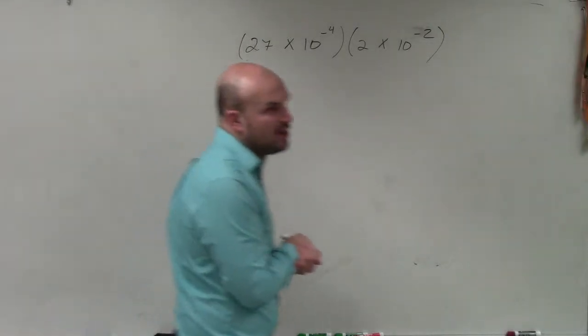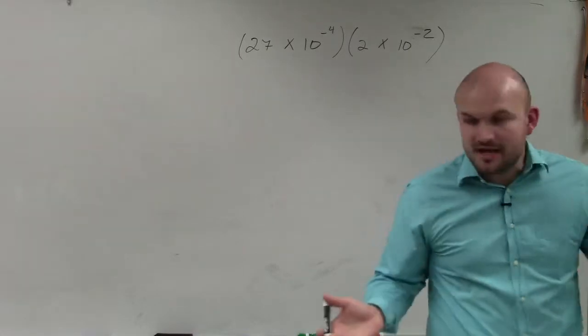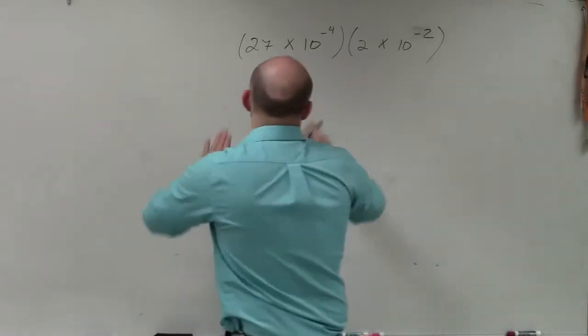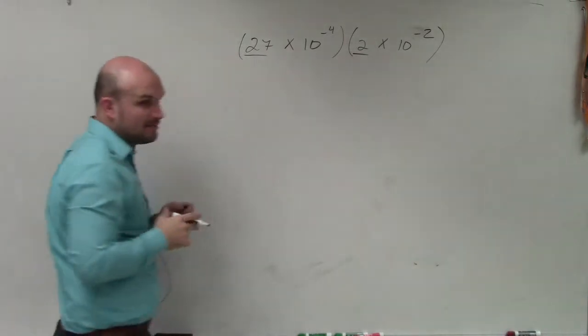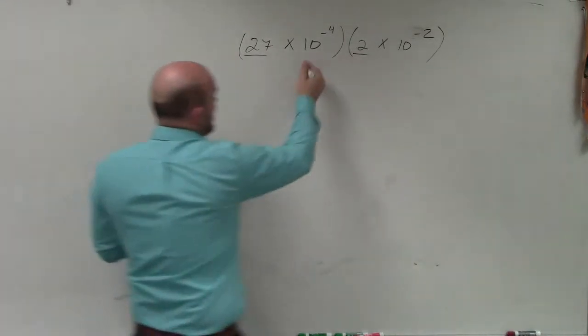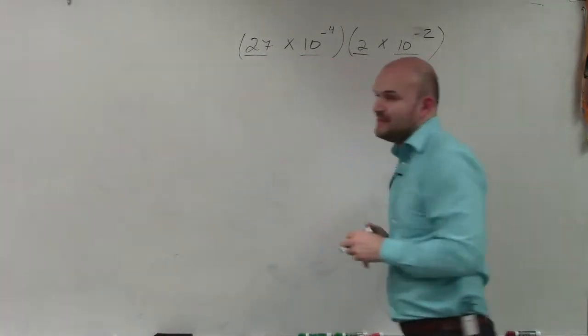So basically, ladies and gentlemen, when we are multiplying numbers in scientific notation, the main important thing is we multiply our numbers that we have, and then we multiply our exponents with base 10.